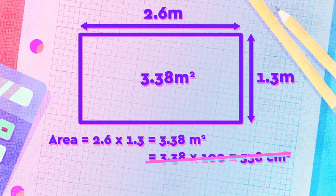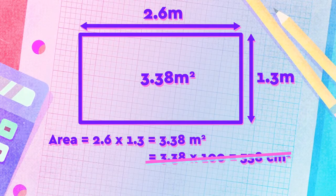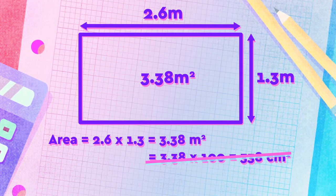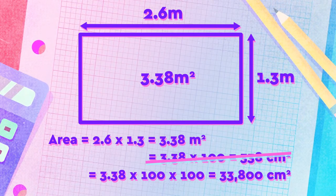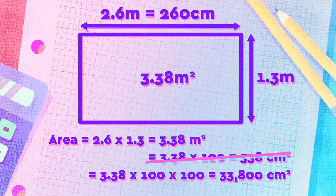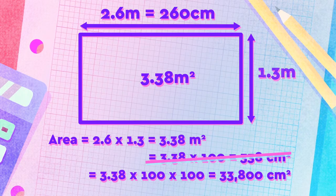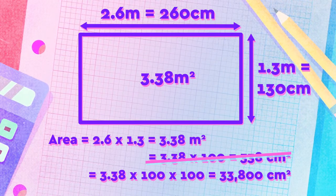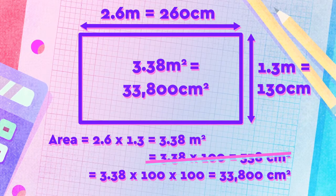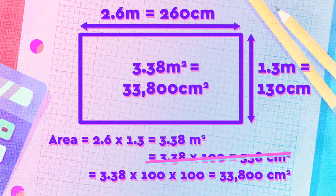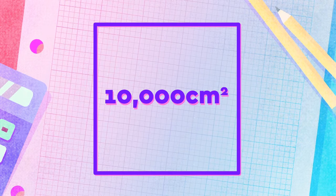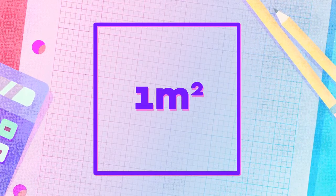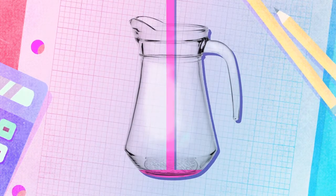Their reasoning is flawed because the student has not realized we are multiplying two lengths together, and therefore the conversion from meters to centimeters is being multiplied by itself twice. Looking at it differently: 2.6 meters is 260 centimeters, and 1.3 meters is 130 centimeters. When we multiply those two numbers together, the answer is 33,800 centimeters squared. This means that 10,000 centimeters squared is equivalent to 1 meter squared.